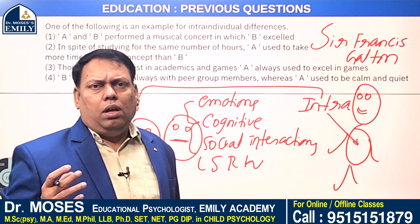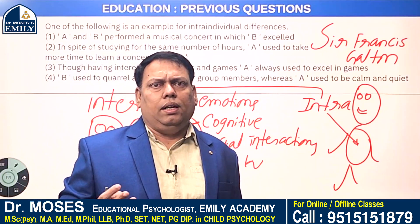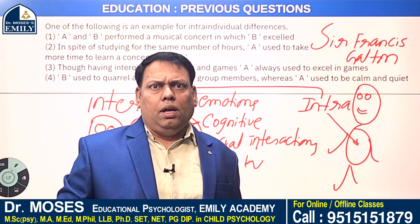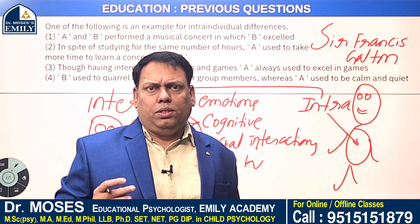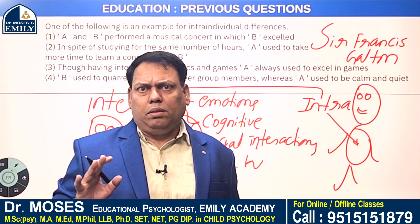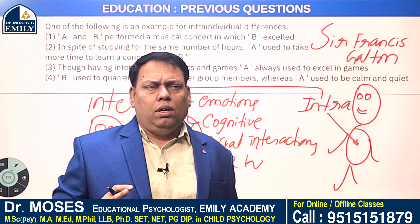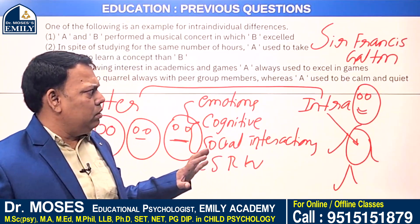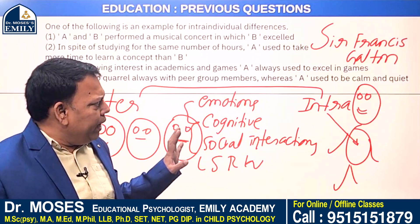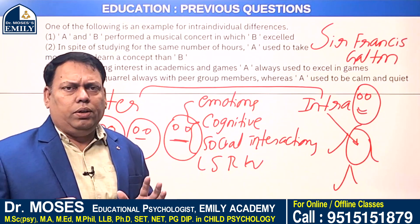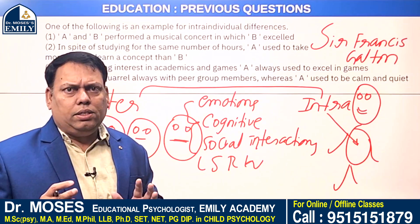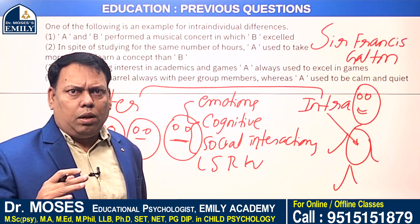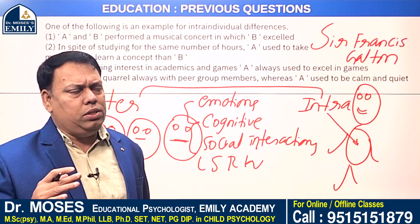For example, Raju has excellent writing but is poor in communication skills. Rani has excellent language skills but is poor in mathematics. These are all examples of intra-individual differences. If you identify all these differences, you will be able to give educational guidance and guide students to select an appropriate course and job.